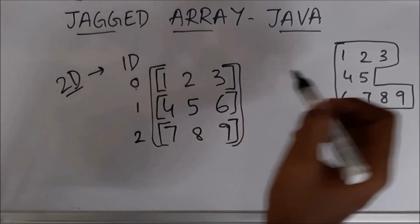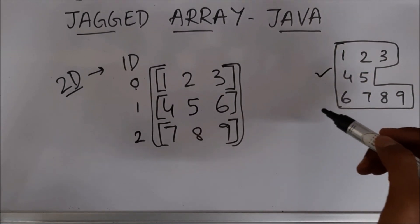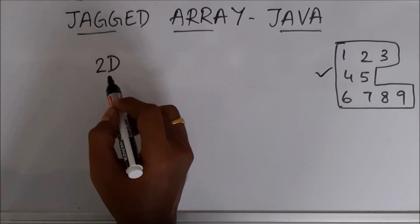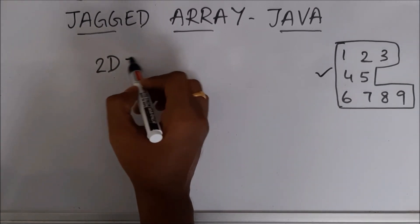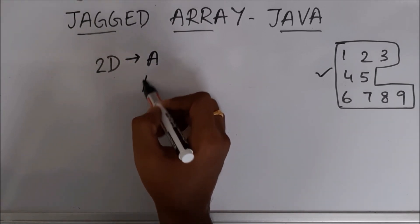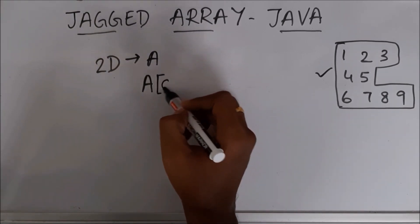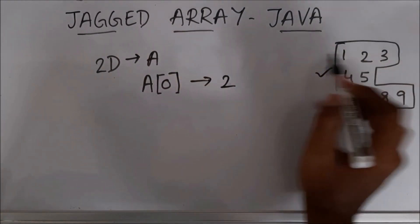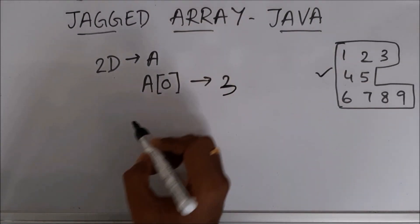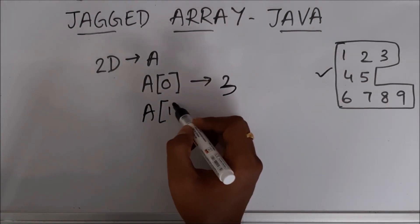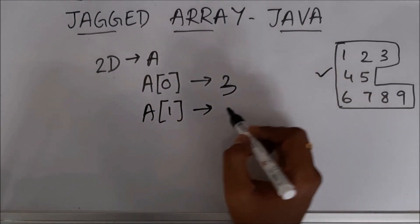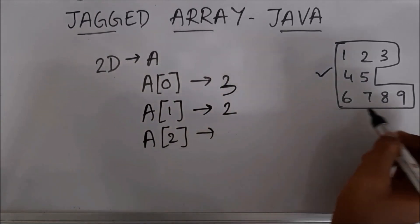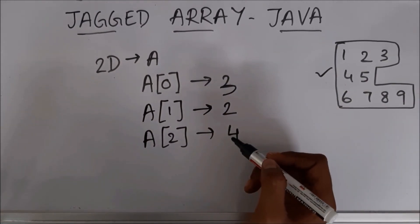Now we are going to use this concept to create a jagged array. What we are going to do is: first create a 2D array, then specify that at row 0 we need 3 elements, at row 1 we need only 2 elements, and at row 2 we need 4 elements.